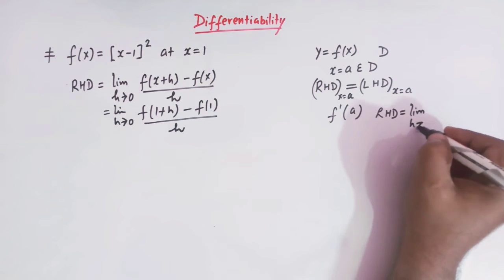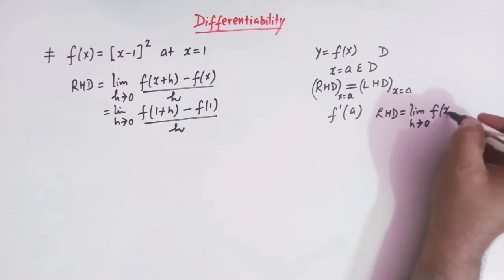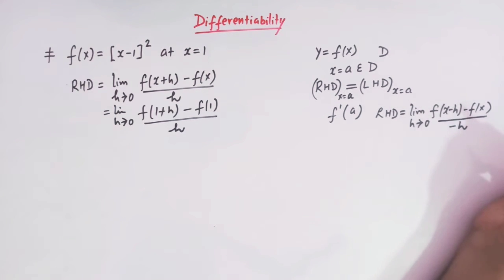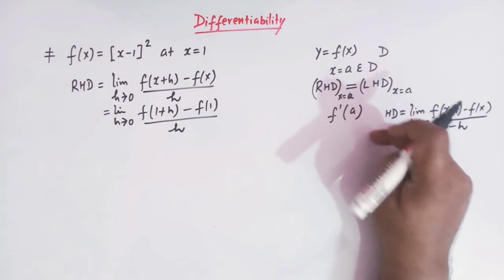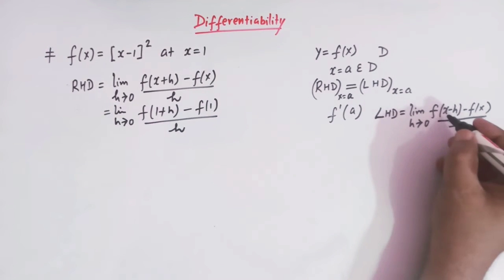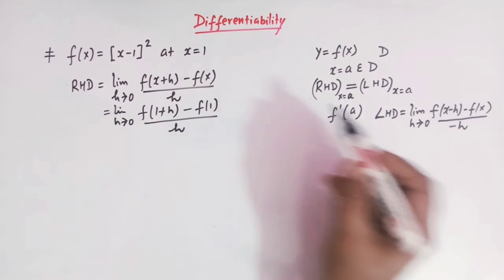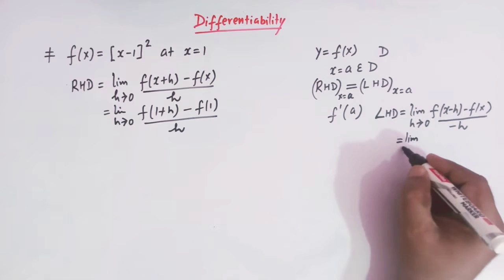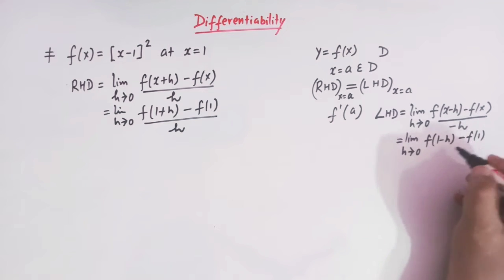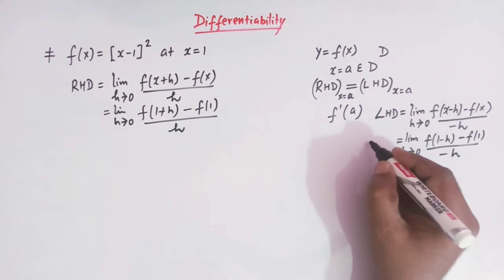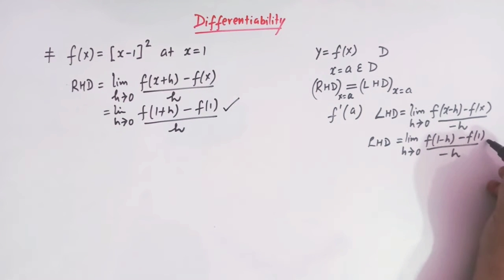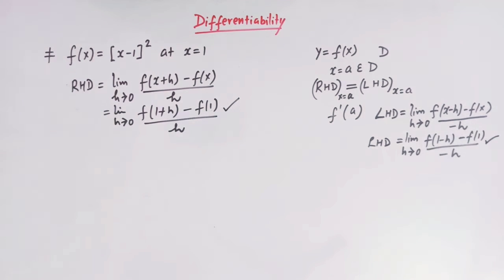Similarly, the left hand derivative is defined by the limit: limit h tends to 0 of [f(x-h) - f(x)] / (-h). Taking x = 1, this becomes: limit h tends to 0 of [f(1-h) - f(1)] / (-h). Let us first calculate the right hand derivative and then we will calculate the left hand derivative.